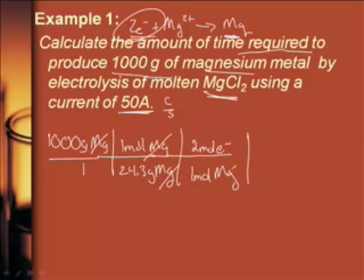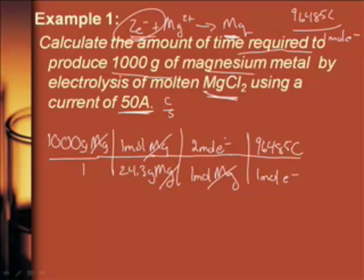The moles of magnesium cancel. I now want to convert to coulombs. Now we've got that number, 96,485 coulombs per one mole of electrons. So I can say one mole of electrons is equal to 96,485 coulombs. The moles of electrons cancel. Now this is coulombs per second, and there's 50 of them. So I can say 50 C in the bottom and I can say one second. The coulombs cancel, I have seconds.